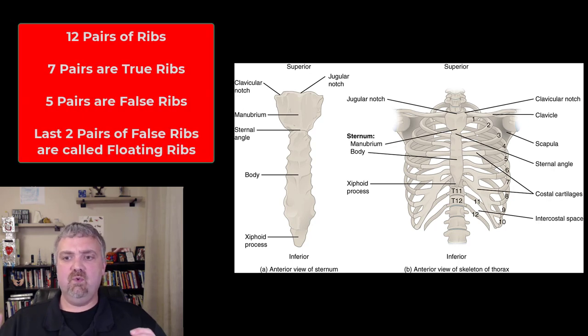You have your ribs. You will notice that you have 12 pairs of ribs. Let's talk about true versus false ribs. The first seven pairs of ribs are called true ribs because they attach directly to the sternum.